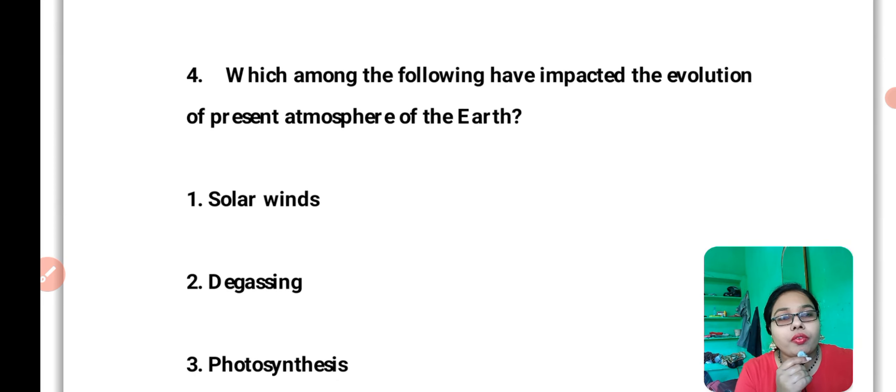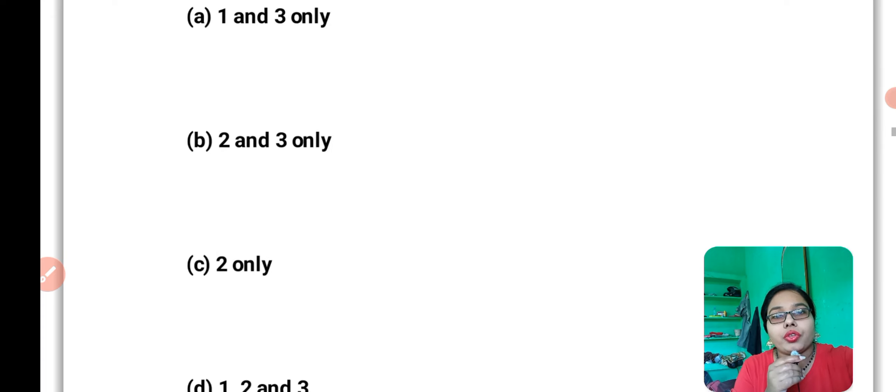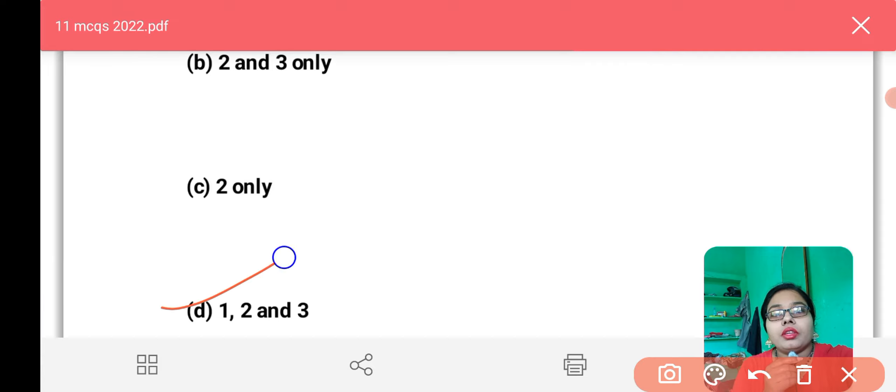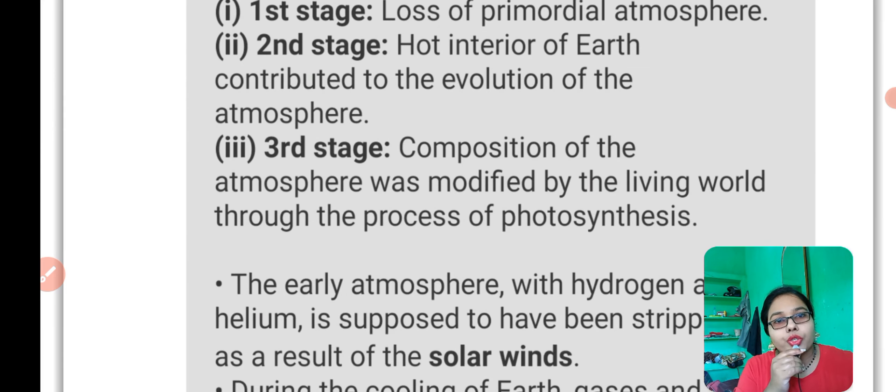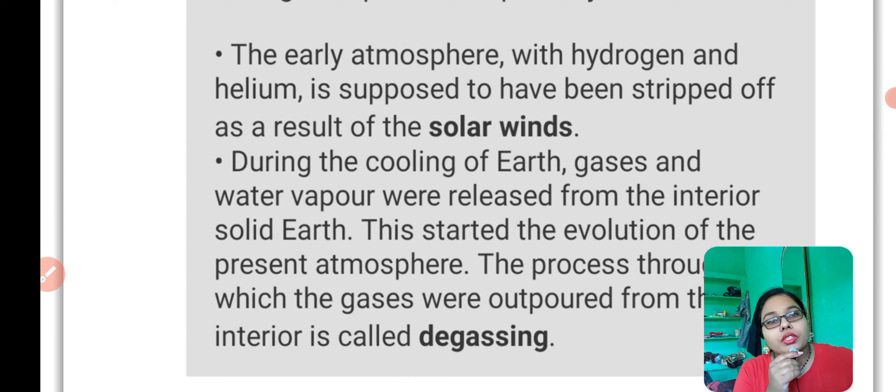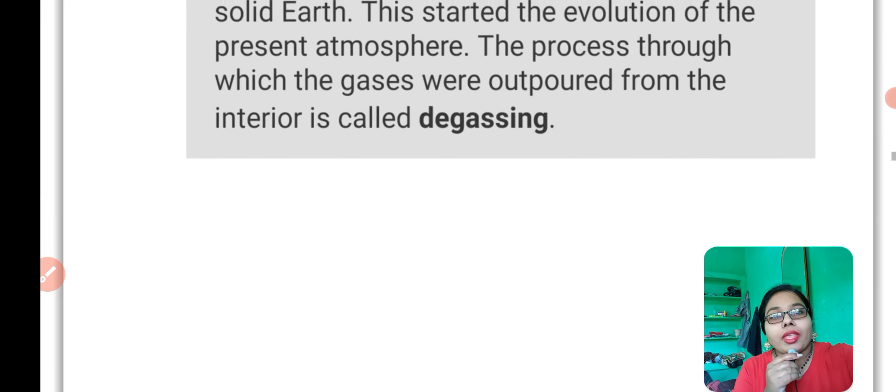Question number 4: Which among the following have impacted the evolution of present atmosphere of the Earth? The options are solar wind, degassing, and photosynthesis. The correct answer is all three - 1, 2, and 3. The evolution of present atmosphere occurred in three stages: first stage is loss of primordial atmosphere, second is hot interior of Earth contributed to the evolution of atmosphere, and third stage is composition of atmosphere was modified by the living world through the process of photosynthesis.